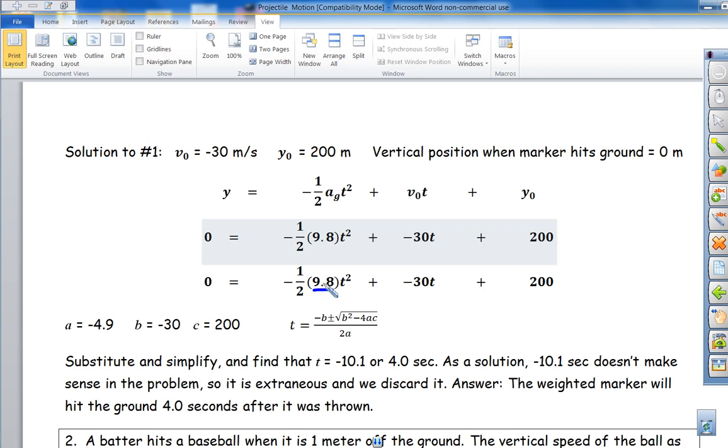It's one half times 9.8 and it's negative, so that's negative 4.9. So in your equation it would be negative 4.9 t squared minus 30 t plus 200. Using these values, plugging them into the equation, you end up with two values for t, and so you get four seconds after it was thrown.